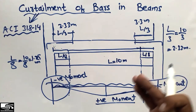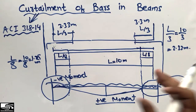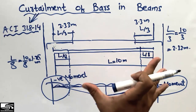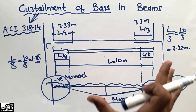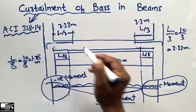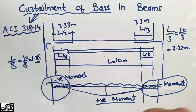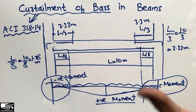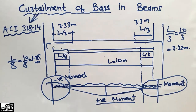We curtail the bars to keep the cost down. If there are a thousand beams in a multi-story building and we multiply by the extra bar length, it significantly increases the cost of the building. So we curtail our bars in beams and slabs to make the structure economical.